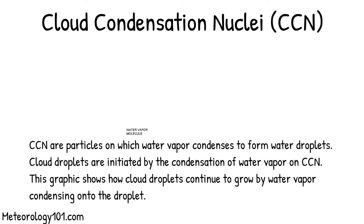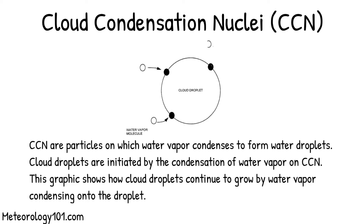Cloud condensation nuclei are particles on which water vapor condenses to form water droplets. Cloud droplets are initiated by the condensation of water vapor on cloud condensation nuclei. This graphic shows how cloud droplets continue to grow by water vapor condensing onto the droplet.